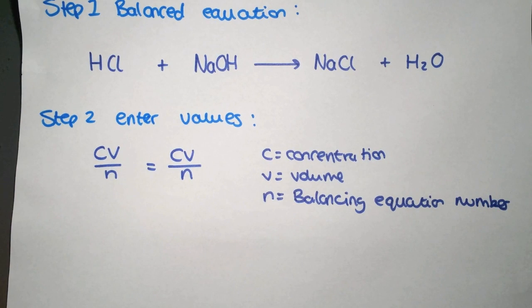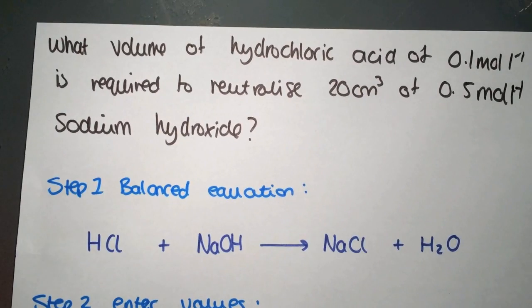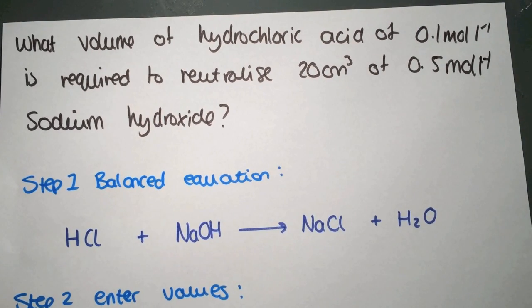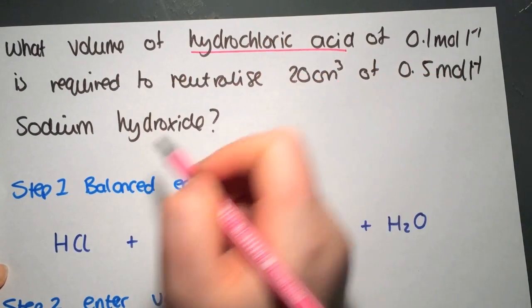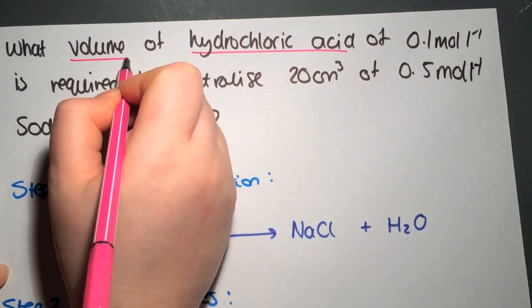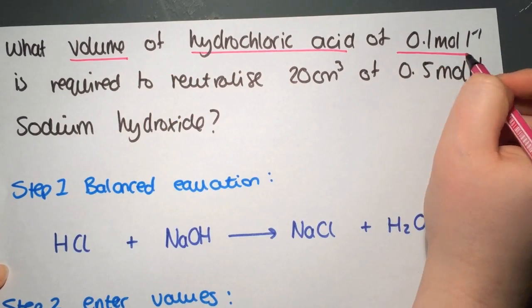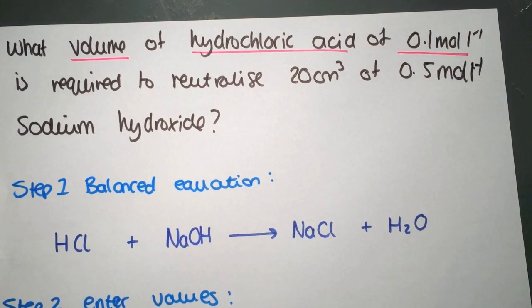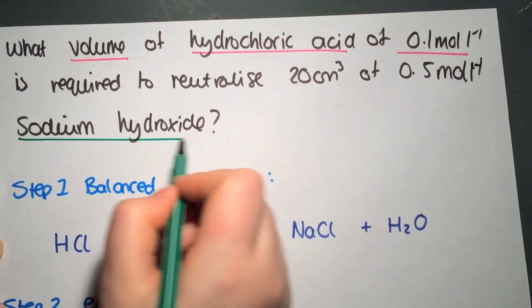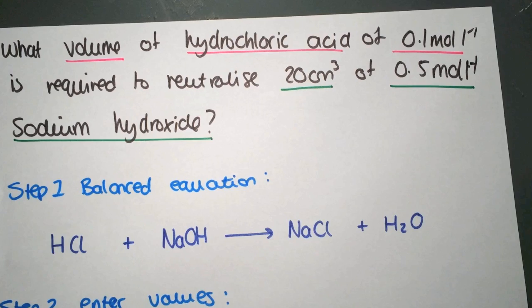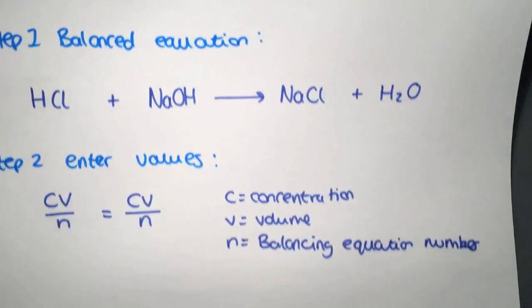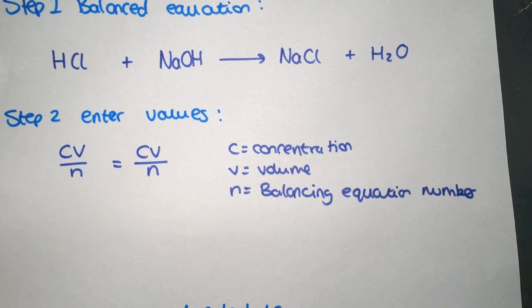You simply have to put in the values that you have. So it's a good idea if we have a look at the actual information and decide which parts belong to which species. We have hydrochloric acid, we're looking for a volume and we have a concentration. And then on the other side we have sodium hydroxide, we have a volume and a concentration. So you need to pick a side that will be acid and a side that will be alkali. I'm going to do acid on the left and alkali on the right.